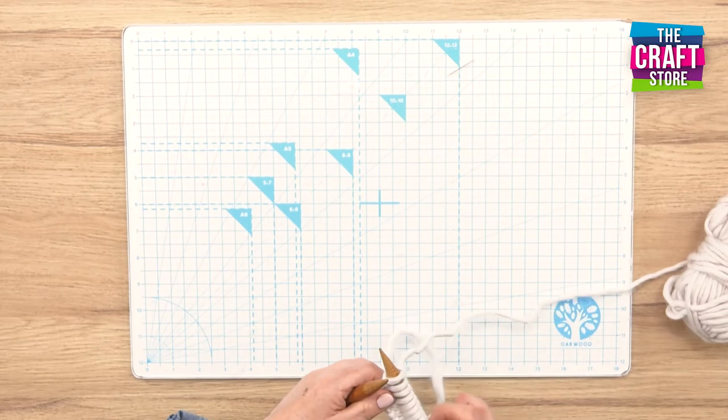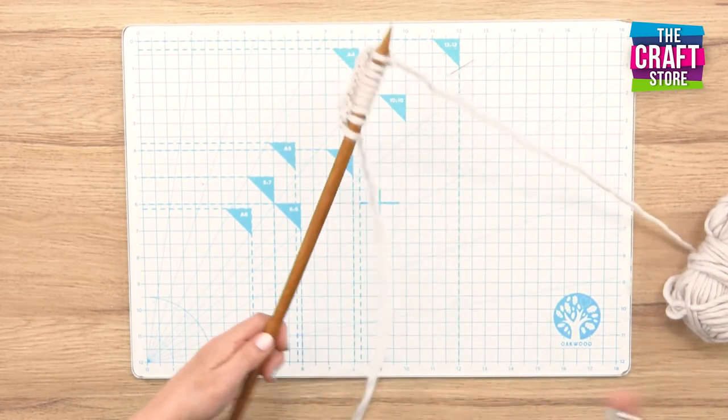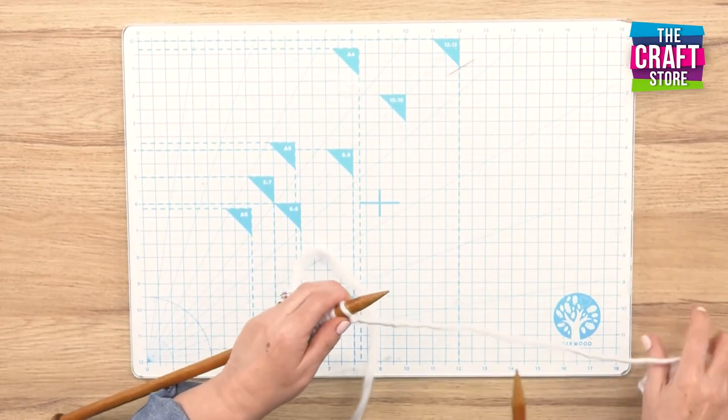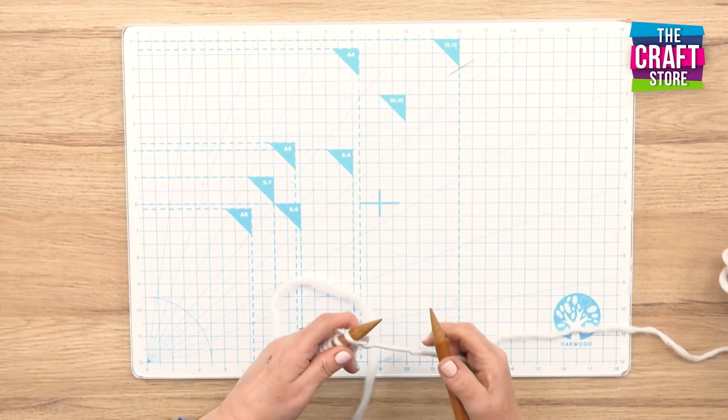And there we are, we'll do another row. The beauty of using a nice big needle and a nice thick yarn is it's quick. A lot of people get quite frustrated because it doesn't grow quick, but it will do with this.